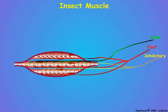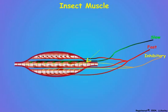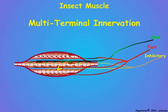Not only may multiple neurons control a single fiber, but insect motor neurons have multiple neuronal end plates distributed over the entire surface of the muscle fiber. This is called multi-terminal innervation.